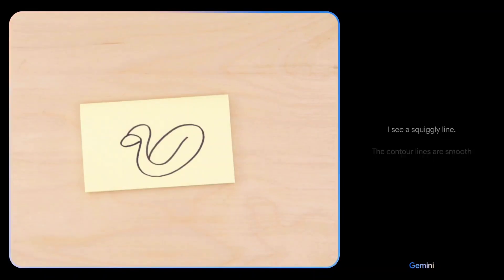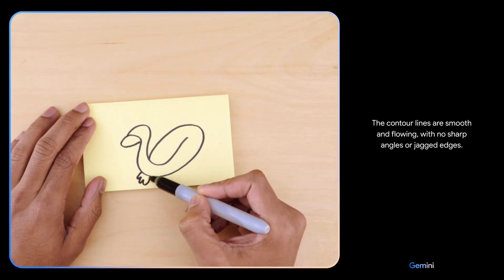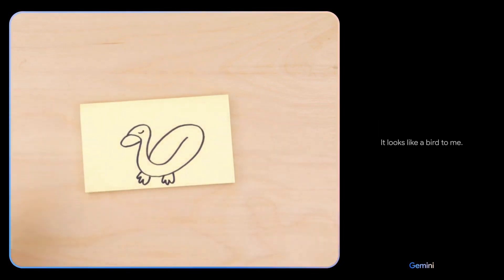What about now? The contour lines are smooth and flowing with no sharp angles or jagged edges. It looks like a bird to me.